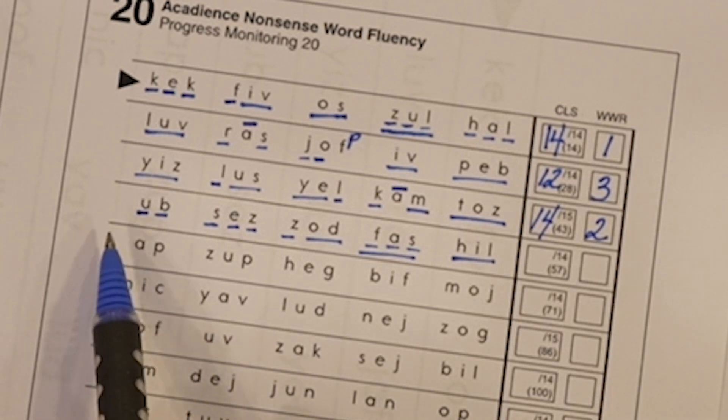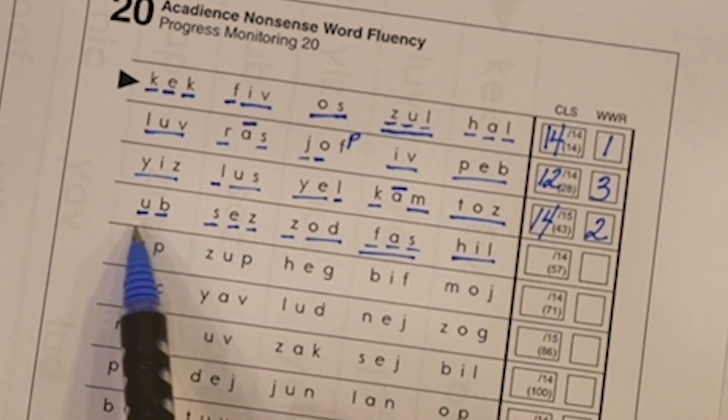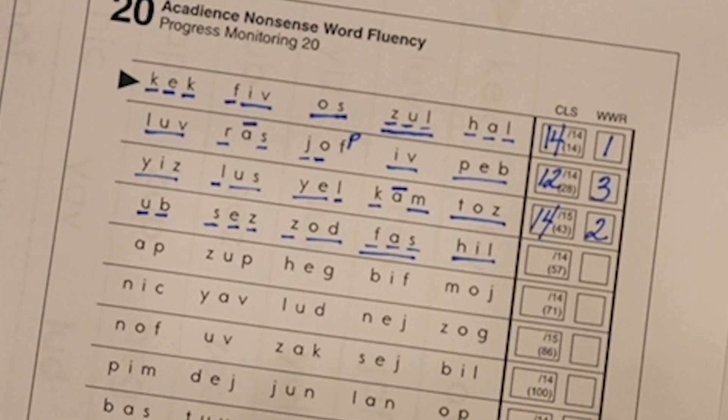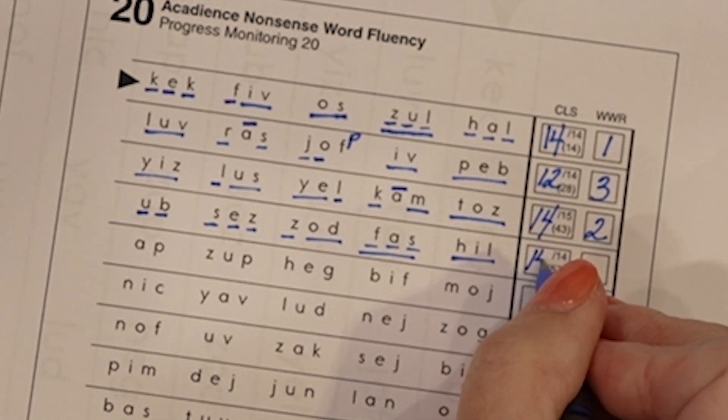Last row. Ooh, looks like I got all correct letter sounds. I see all the letters are underlined. Full 14 points.